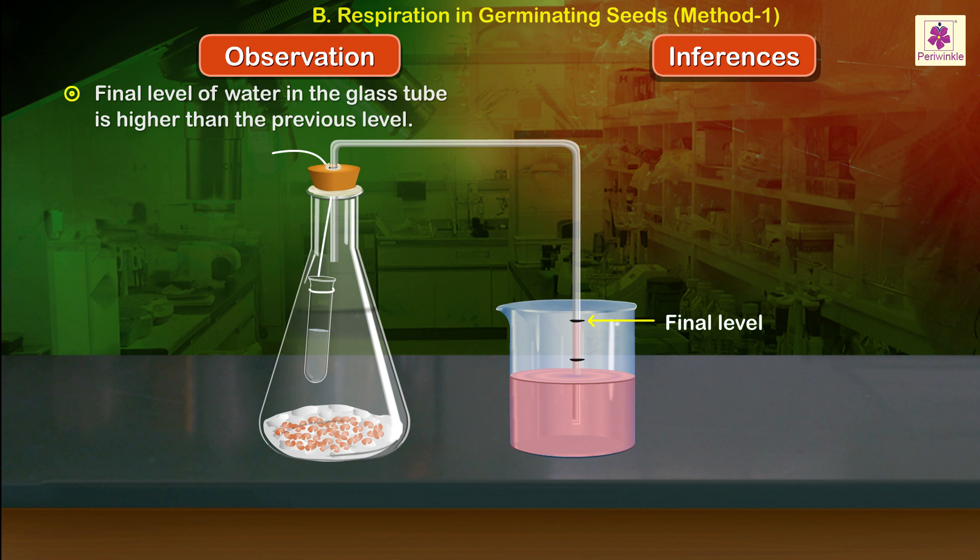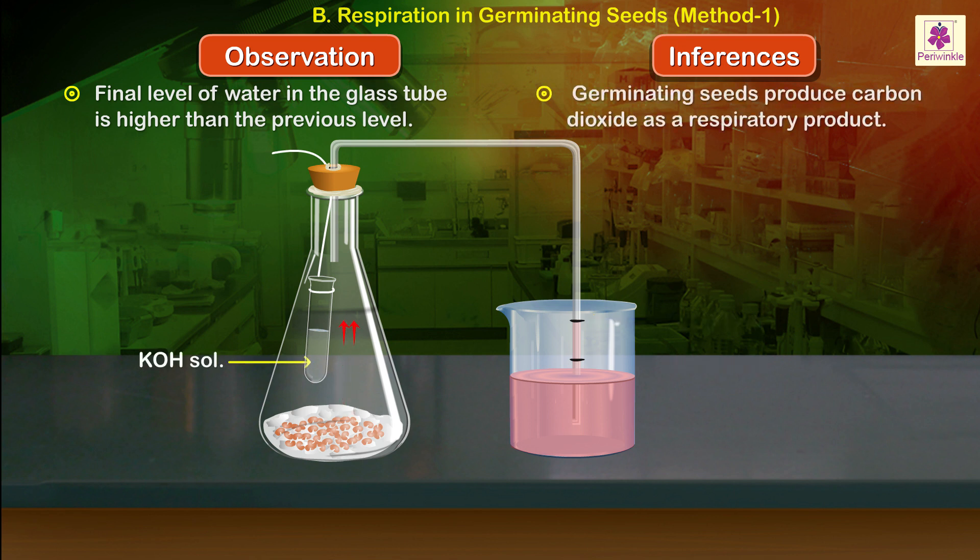Final level of water in the glass tube is higher than the previous level. Germinating seeds produce carbon dioxide as a respiratory product.